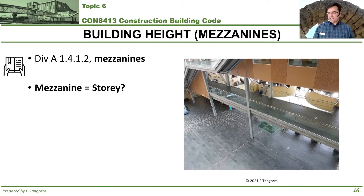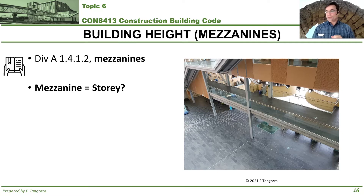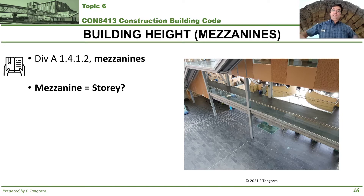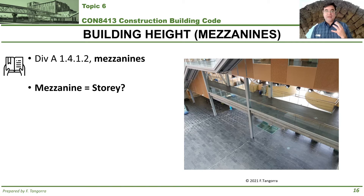But the question is: does that partial story count as a full story according to the building code? What I've included here is an image of an interior view of our very own ACE building, which shows a mezzanine. You can see how that portion of the second floor does not cover the entirety of the first floor — it's a partial floor. But is it considered a story according to the building code?